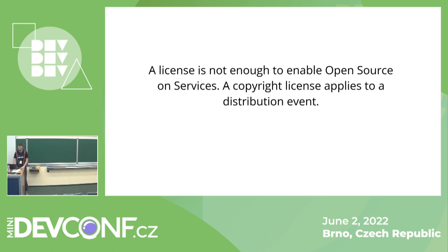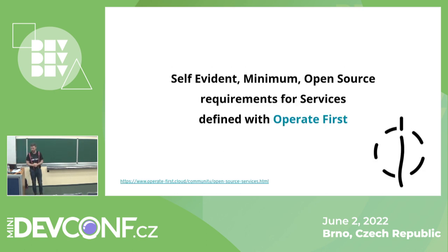We were talking about this in the Operate First community — a community with the goal of operating services together, not just in one company, but with different companies, different communities, different participants. We came up with two self-evident minimum open source requirements for services, and I'd like to share these with you. It took a lot of discussion on how this would work, and I'd be interested in your contributions, participation, or feedback on these.